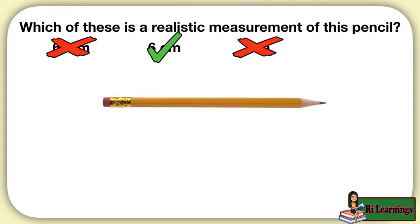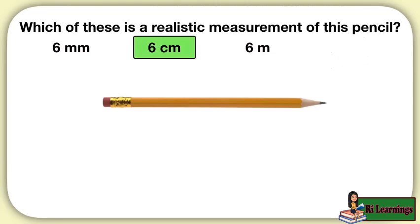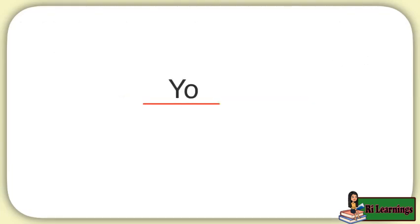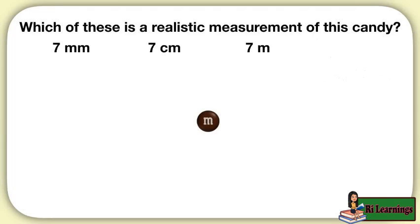Six meters would be too big. The only realistic measurement of a pencil is six centimeters. Now it's time for you to practice on your own. Which of these is a realistic measurement of this candy? Well, I know that these candies are pretty small. So seven millimeters, that actually sounds like a realistic measurement. Seven centimeters would be seven times the size of a dime. That's too big. As are seven meters, those are way too big. Seven millimeters is the realistic measurement of this candy.